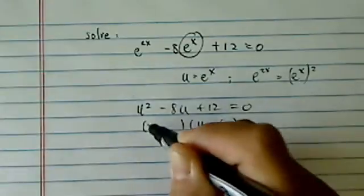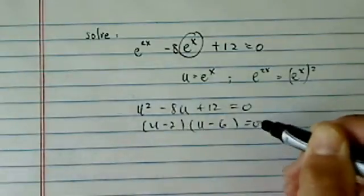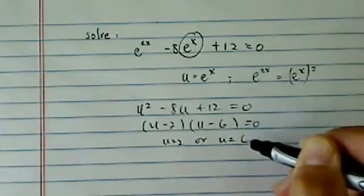Let's factor it first. So u is equal to 2 or u equal to 6.